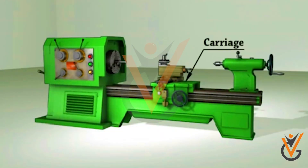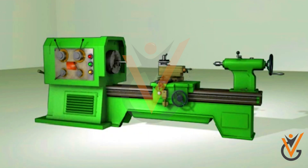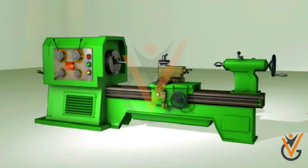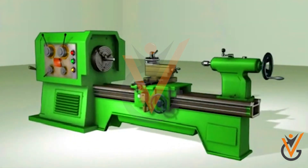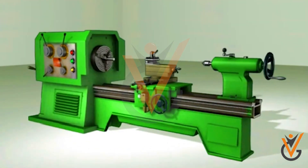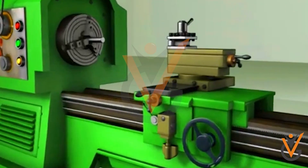Carriage is located between the headstock and tailstock. The basic function of the carriage is to support, guide, and feed the tool against the job during operation. It consists of 5 main parts: saddle, cross slide, compound rest, tool post, and apron.